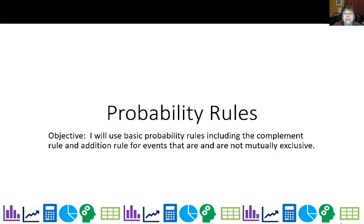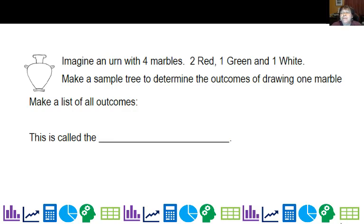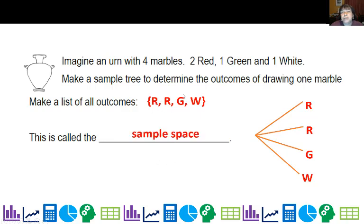So let's go ahead and go on to some probability rules. First of all, imagine an urn with four marbles, and you might have done this when you did probability in geometry or middle school. We've got two red, one green, and one white. We can actually make a sample tree to determine the outcomes of drawing one marble. So there is before I pick, and then I could end up with one red, or the second red marble, or the green or the white. So I'm going ahead and listing them out. So this would be my sample space. Now I could just actually list the one red, and that would also be a legitimate way.